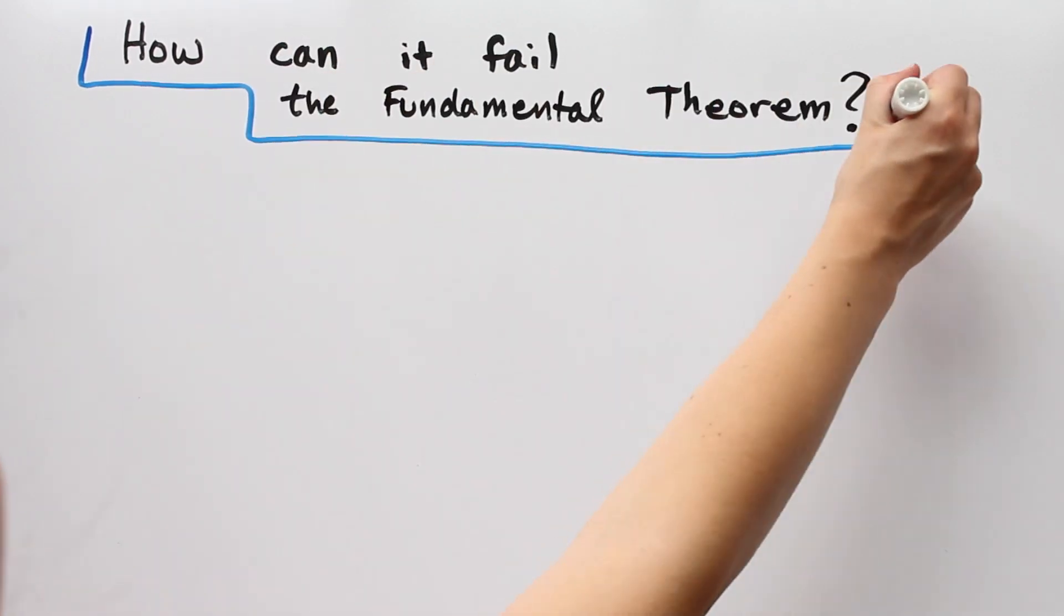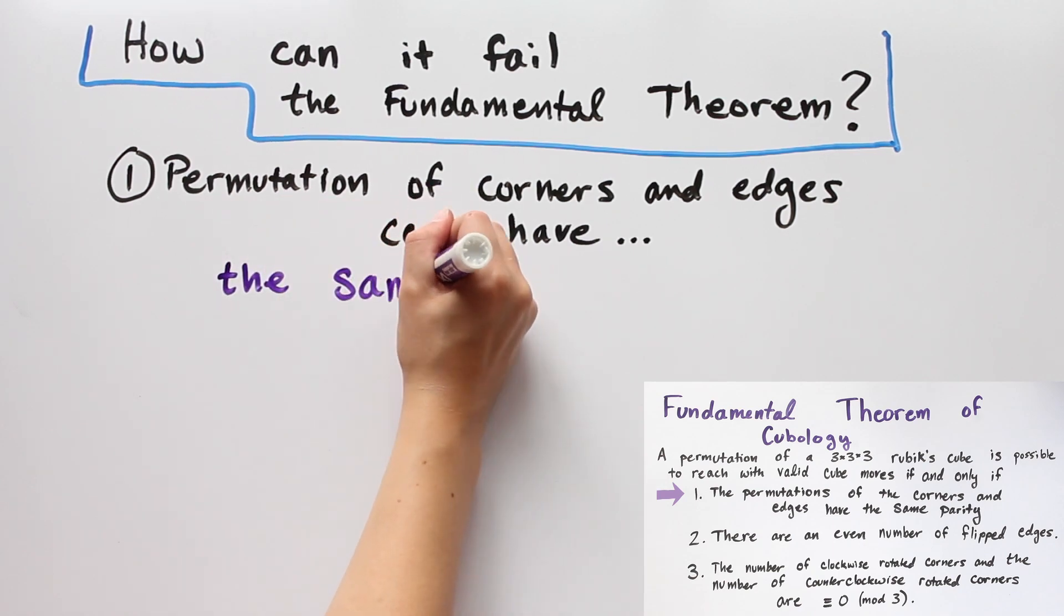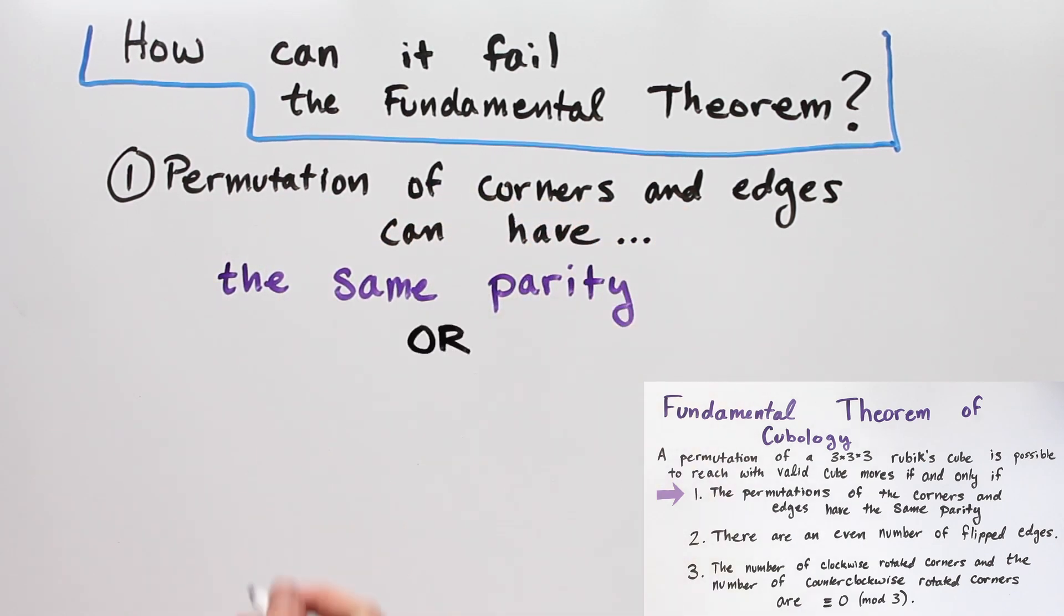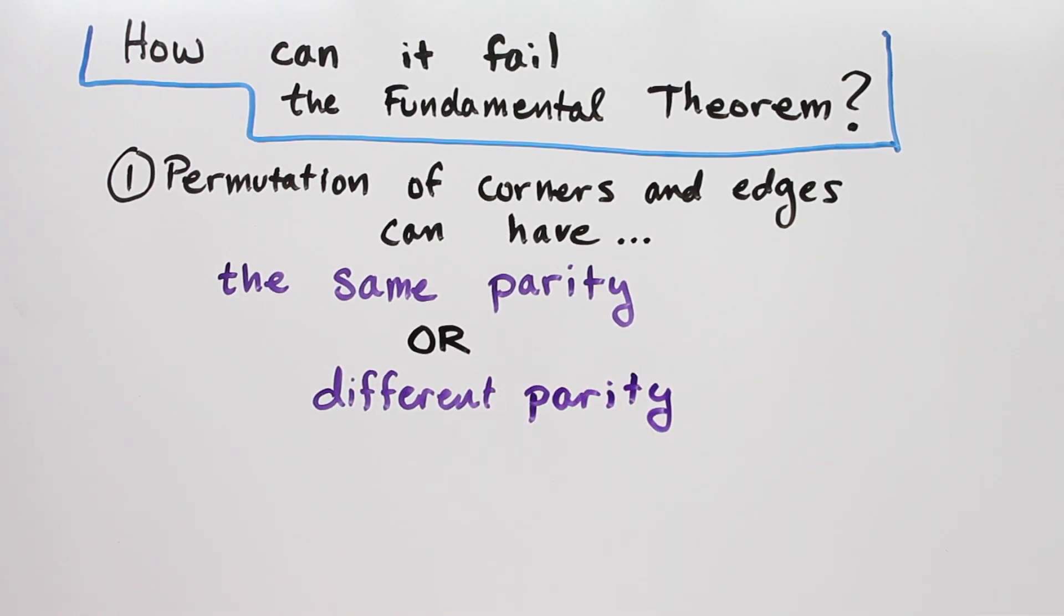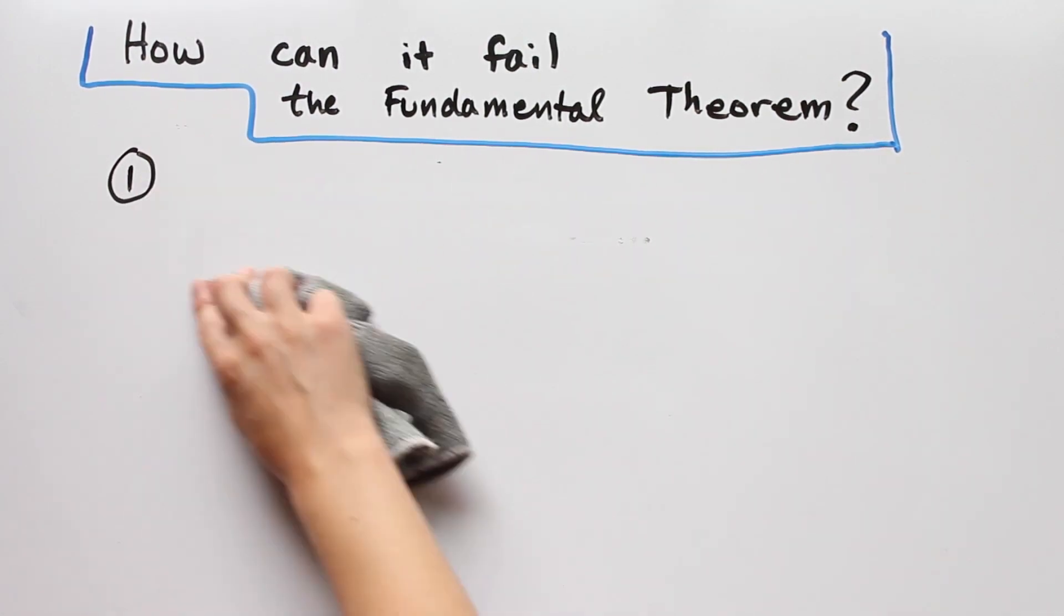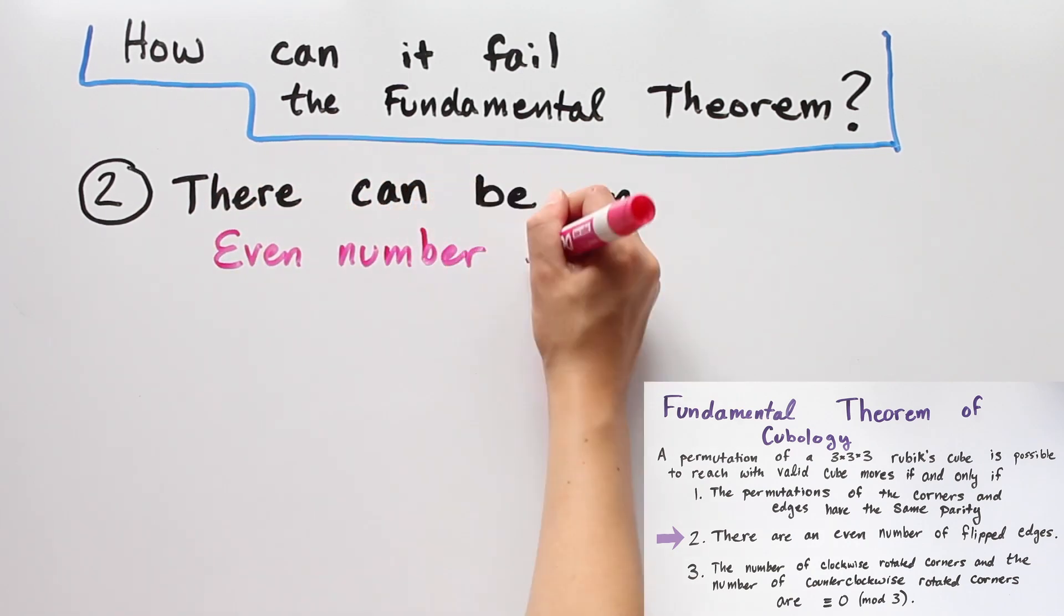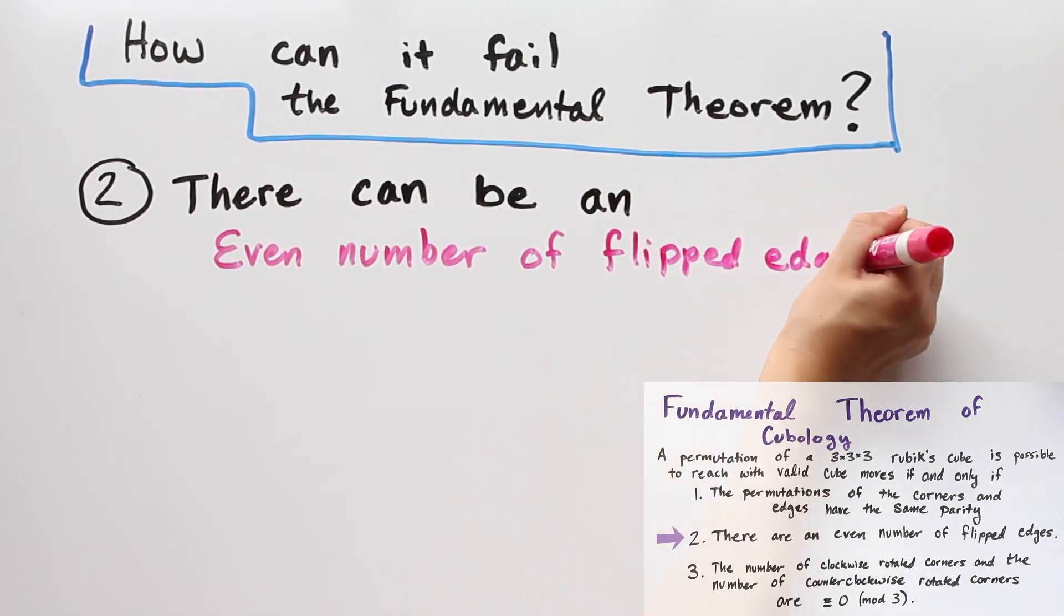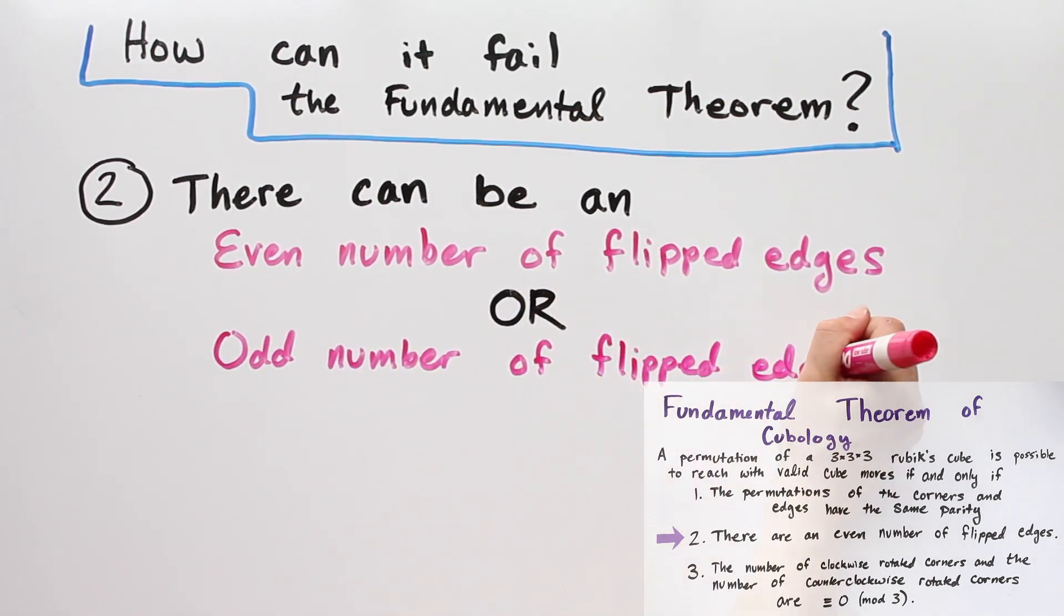The first condition requires that the permutation of the corners and edges have the same parity. A given cube arrangement can satisfy this condition, or it can have a different parity for the corner permutation and edge permutation. Hence, this condition gives two possibilities. The second condition requires that there are an even number of flipped edges. Any cube arrangement can have an even or odd number of flipped edges, again giving two options.